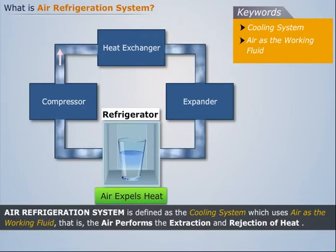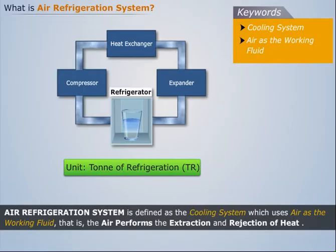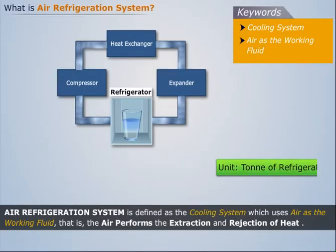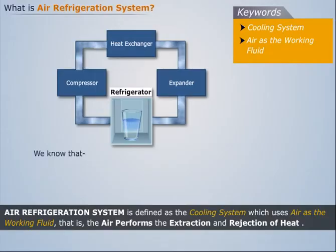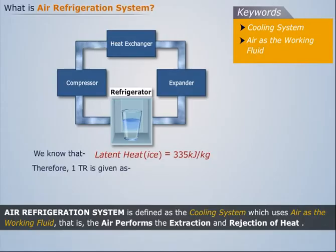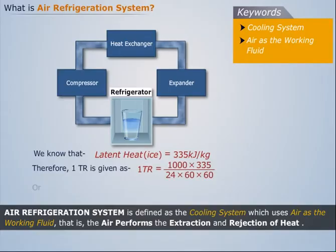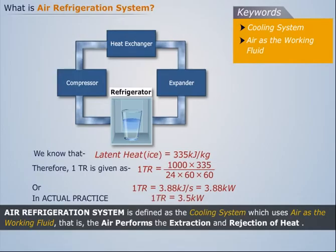The practical unit of this refrigeration is tonne of refrigeration (TR). A tonne of refrigeration is defined as the amount of refrigeration effect produced by uniform melting of one tonne of ice at zero degrees Celsius in 24 hours. As we know that latent heat of ice is equal to 335 kJ/kg, therefore one tonne of refrigeration can be calculated accordingly. However, in actual practice, one TR is equivalent to 3.5 kilowatt.